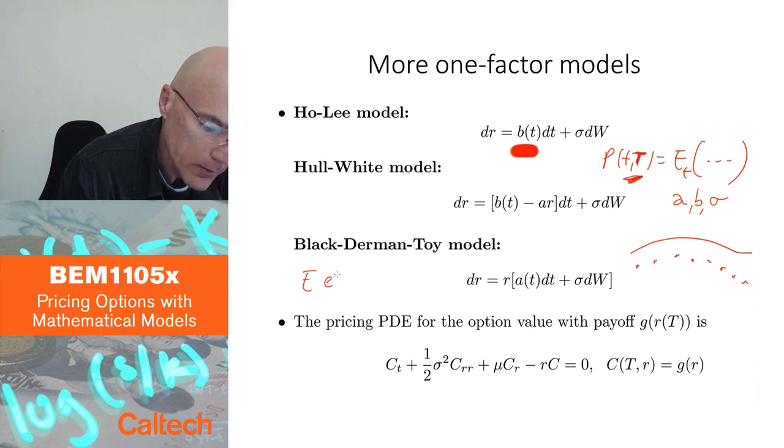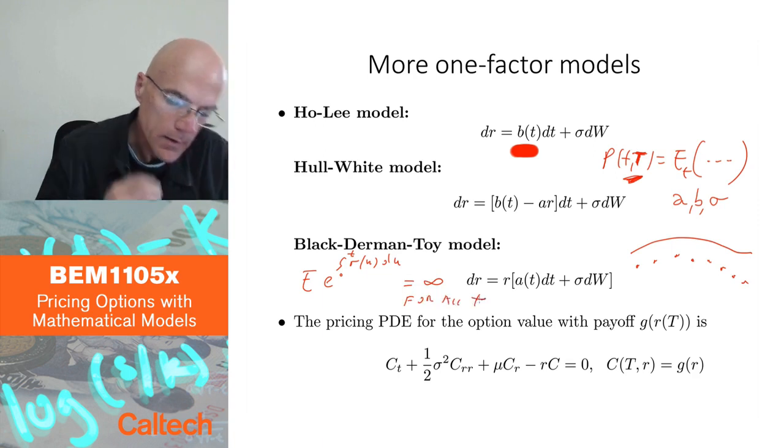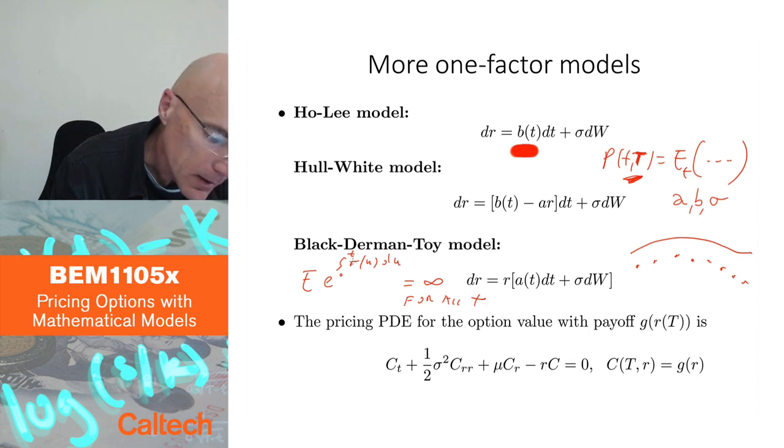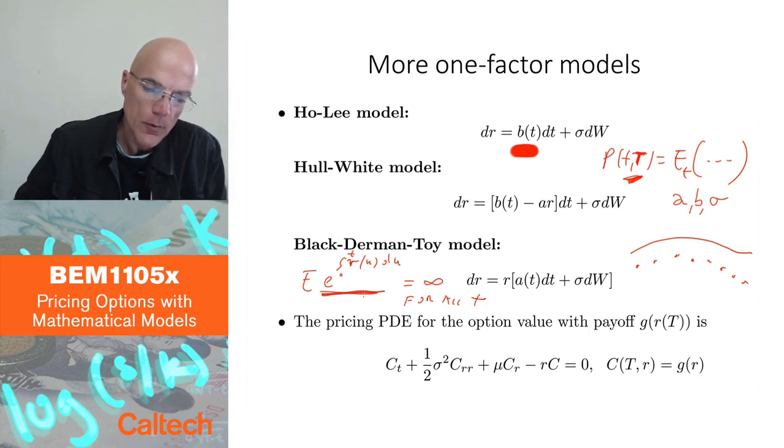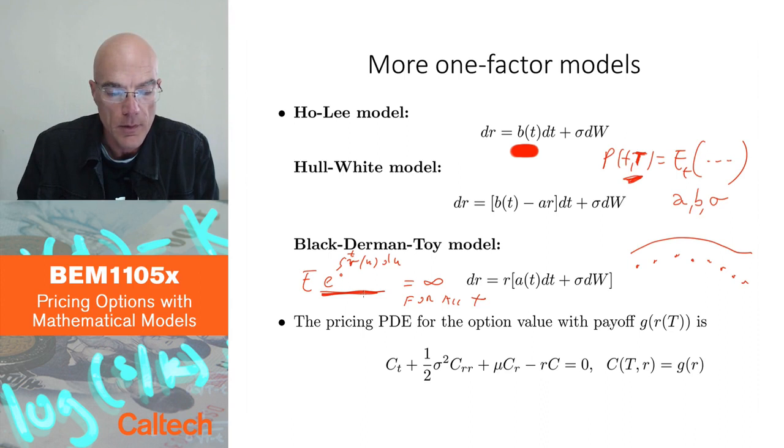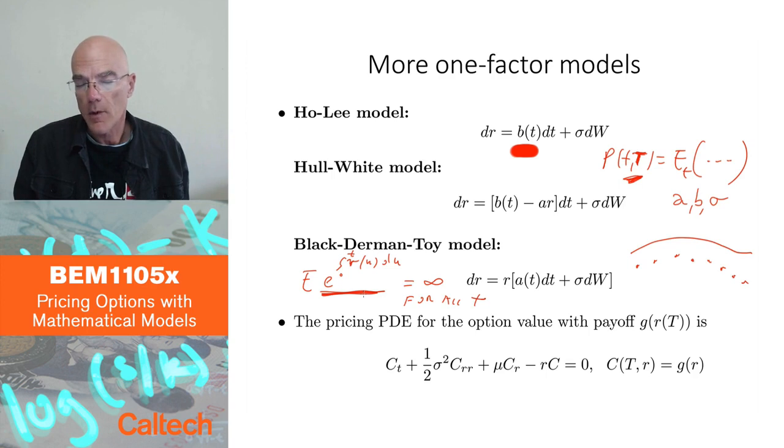And the reason why it doesn't work is you can show that this model, expected value of e to the integral 0 to t, r(u) du, is infinity for every t. What does this mean? This means that, what is this, this thing here? This thing here is how much one dollar will return to you, if you put it in the bank account with interest rate r, after time t. So this would say that, on average, one dollar in the bank account, this interest rate would give you infinite amount of money, in any amount of time. So fantastic, that would be great, but obviously not realistic.